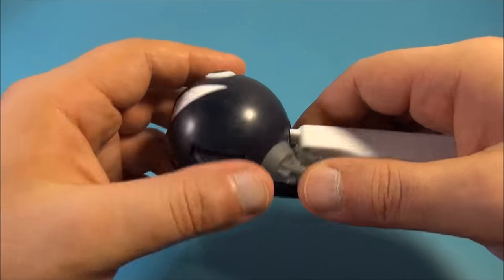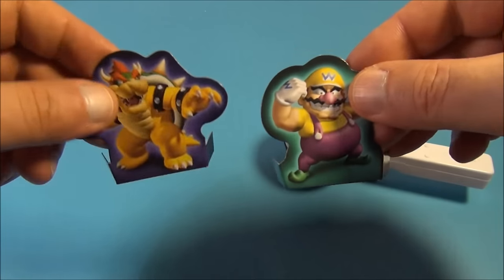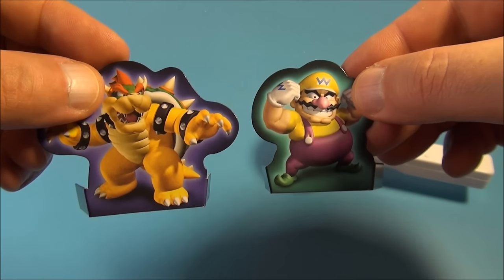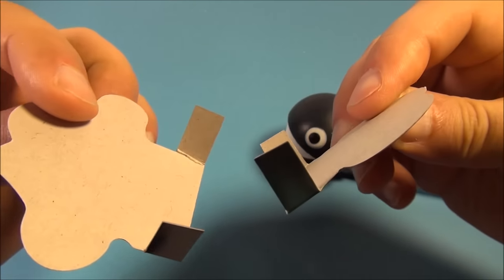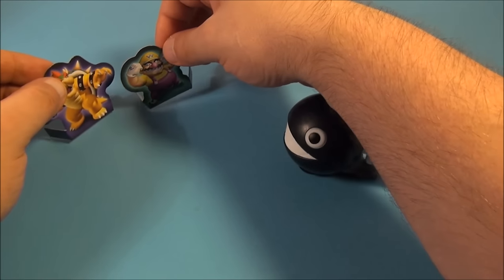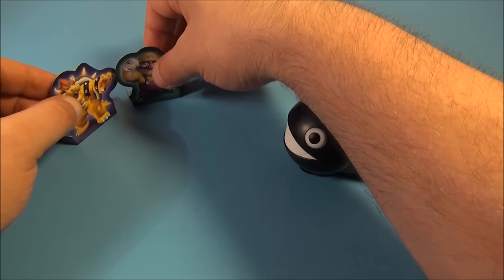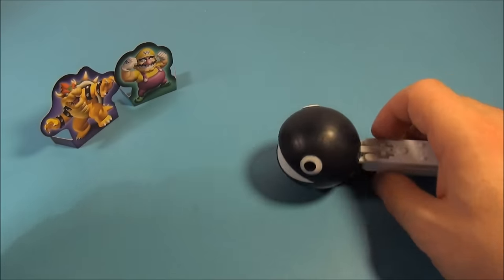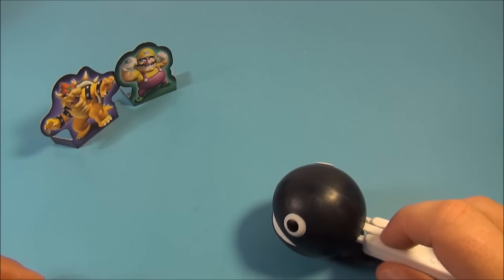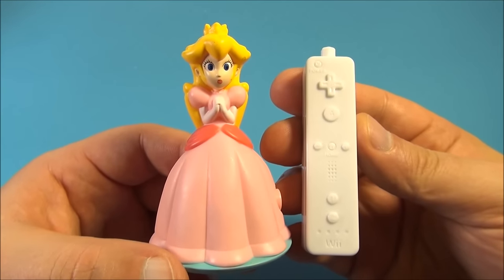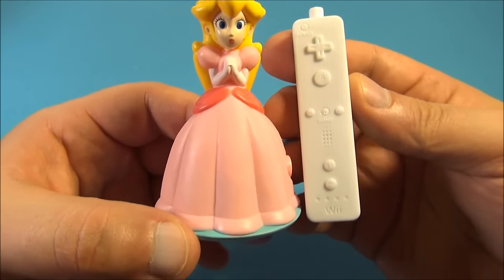You've got some wheels underneath here so he can roll and then you got a couple of targets that came with the set, you got Bowser and Wario. And then all you do, you can see there, you fold the back tabs and make them stand up and use them as targets. Let's see if we can hit one of these guys. Push that button right there and launch.